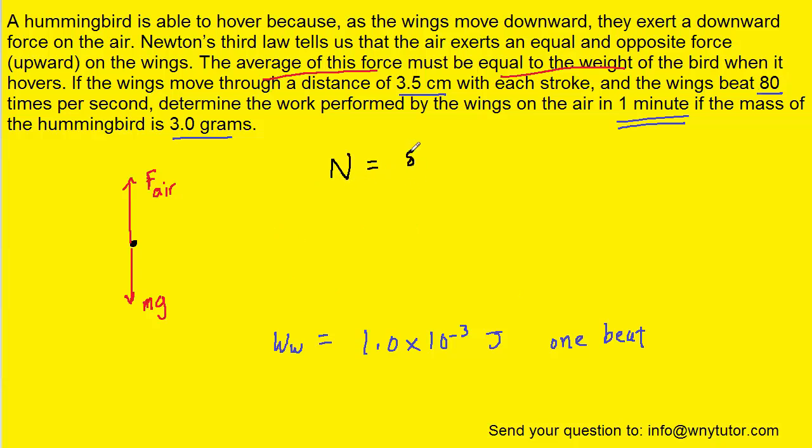We'll figure out the number of times the bird beats its wings by multiplying the 80 times per second by 60 seconds over one minute. If we set it up that way, we'll see that the seconds cancel, and we get 4800 times, or beats, per minute.